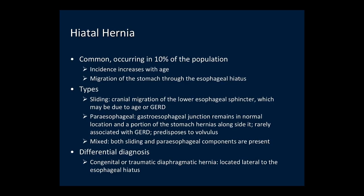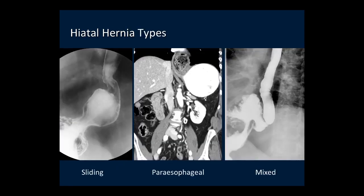A diaphragmatic hernia is when the stomach protrudes through a defect in the hemidiaphragm, located lateral to the esophageal hiatus. On the sliding hernia shown by upper GI, the GE junction is above the diaphragm. In the paraesophageal type shown by CT, the GE junction is in normal position and a portion of the stomach herniates alongside the distal esophagus. The mixed type combines sliding and paraesophageal, with the GE junction above the diaphragm and stomach herniation alongside the distal esophagus.